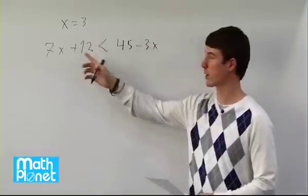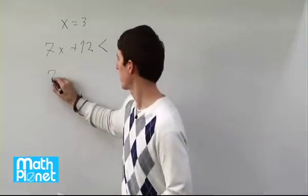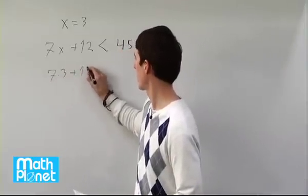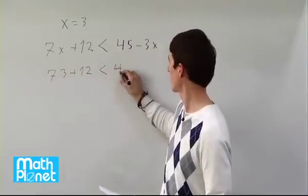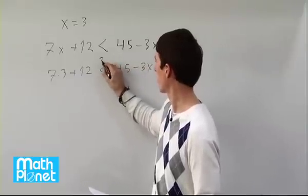So let's plug in our 3 for these x's and then see if this is true. So 7 times 3 plus 12 less than 45 minus 3x. So this is the question here.